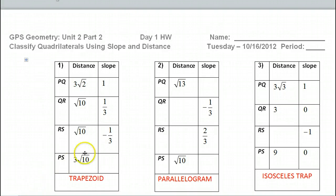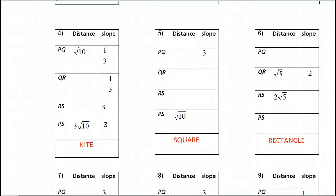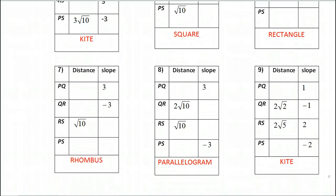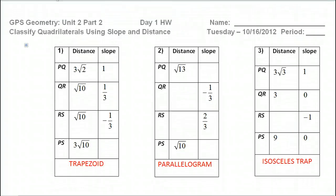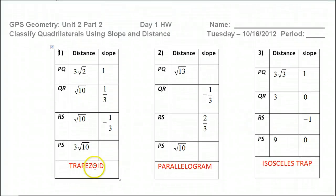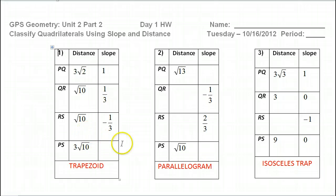On this assignment, we are given a certain quadrilateral — a trapezoid, parallelogram, isosceles trapezoid, kite, square, rectangle, or rhombus. There are seven of them. We're told which quadrilateral we are dealing with, and then we're given a table with distances and slopes, and we're supposed to fill in the table.